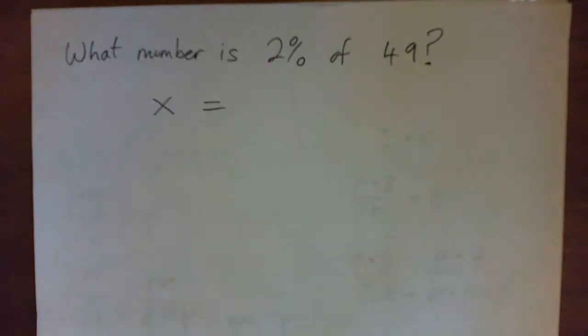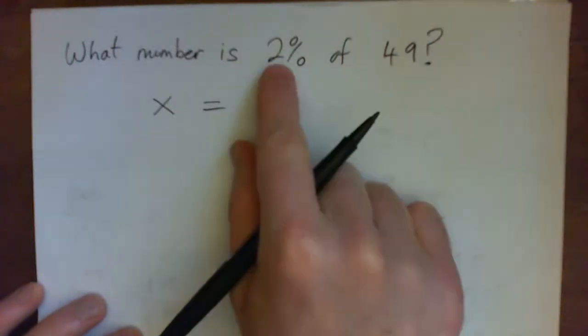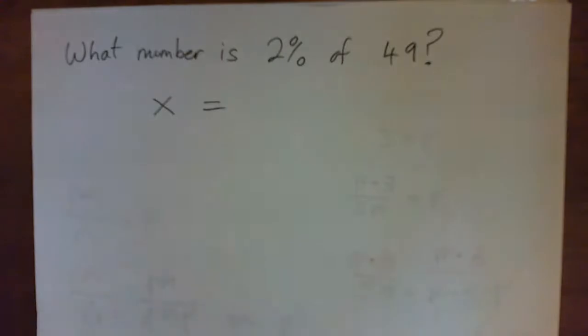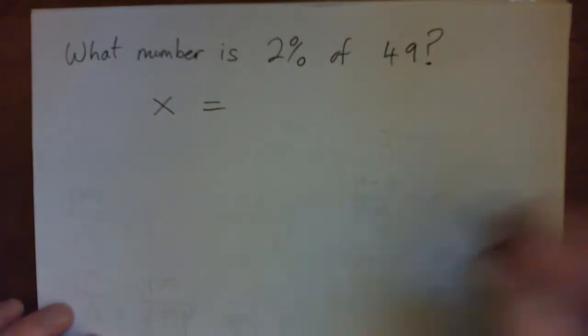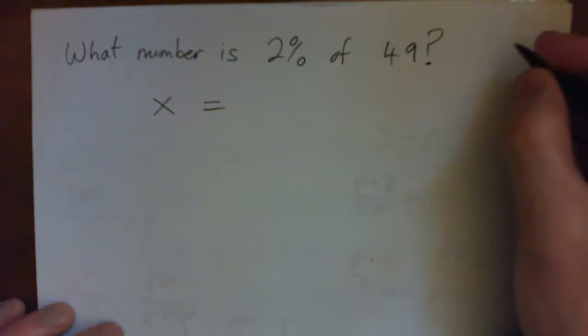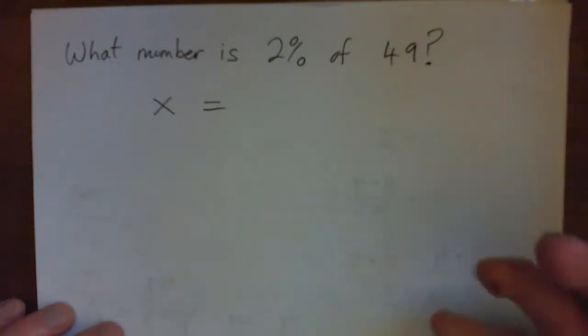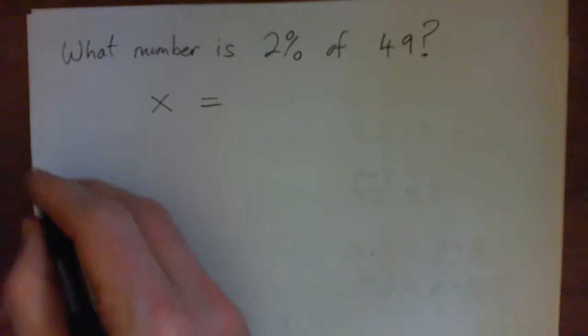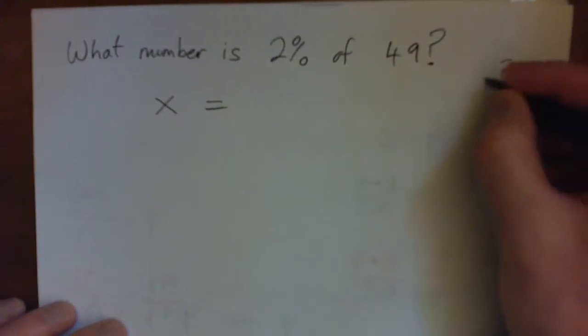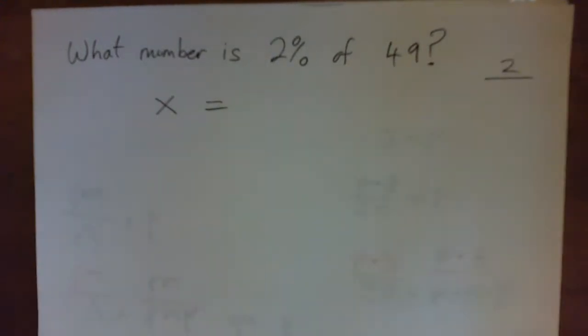2% though, whenever you're working with percents you've got to change them to decimal so that we can actually do a calculation. So 2% I want to write that as a fraction. What is 2% as a fraction? 2% is 2 over 100.